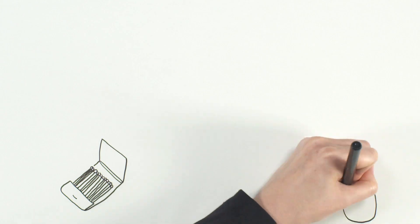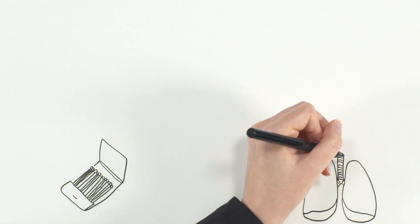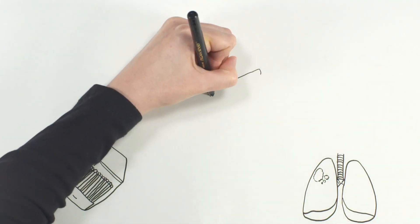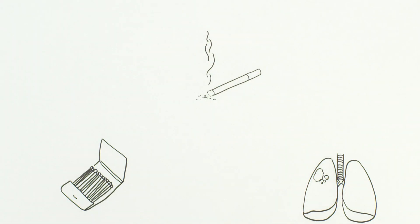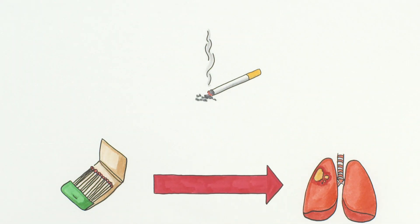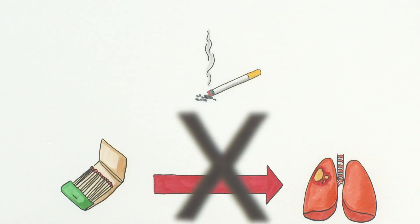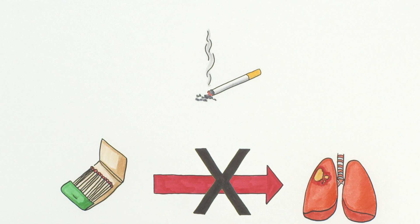A classic example of confounding involves the investigation of an association between carrying matches and lung cancer, where researchers concluded that people who carry matches are more likely to develop lung cancer. This is, of course, not the correct root cause.